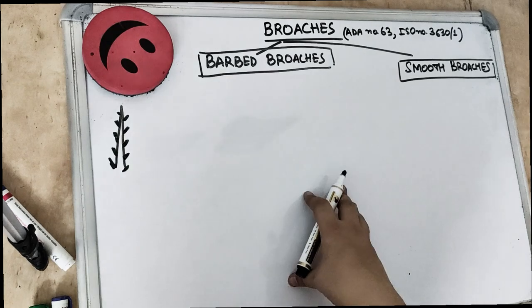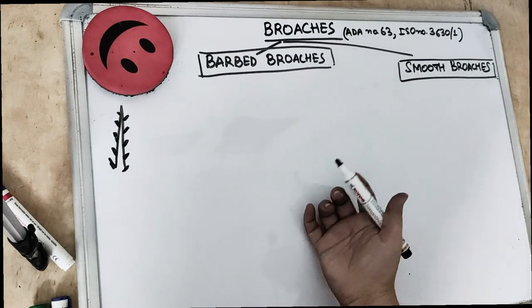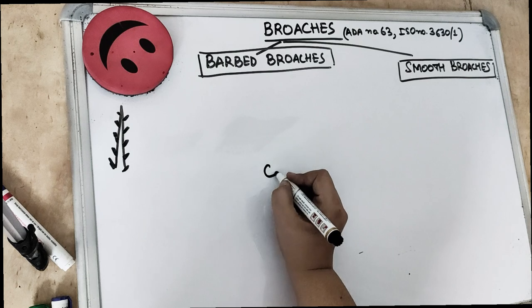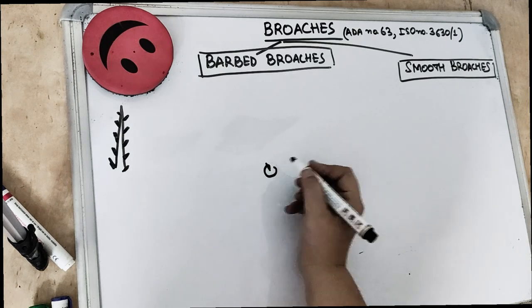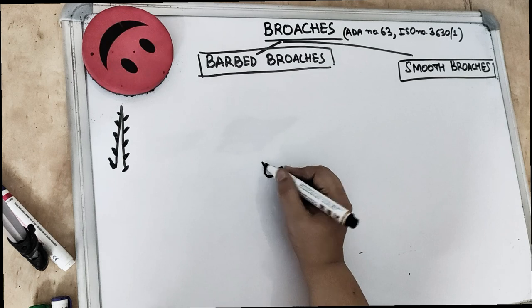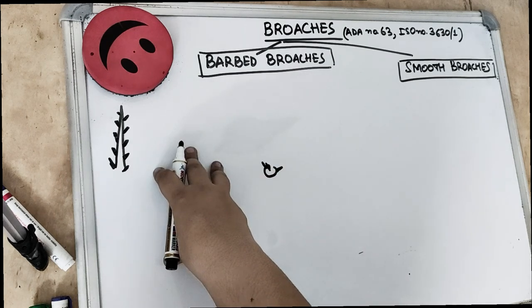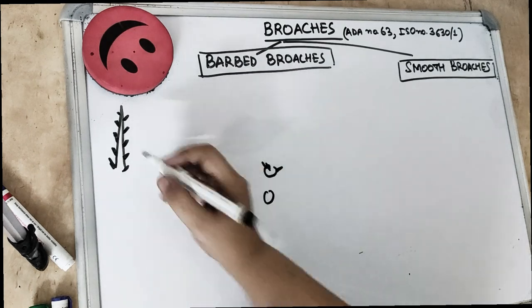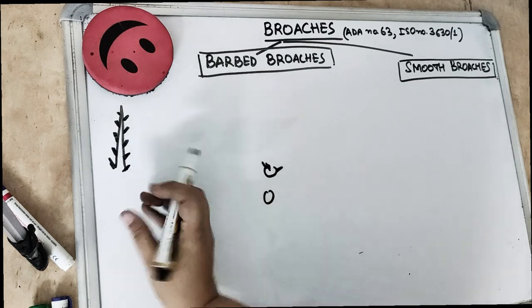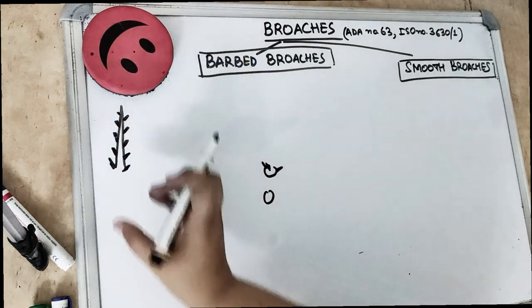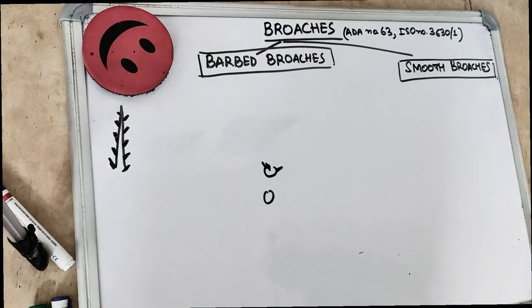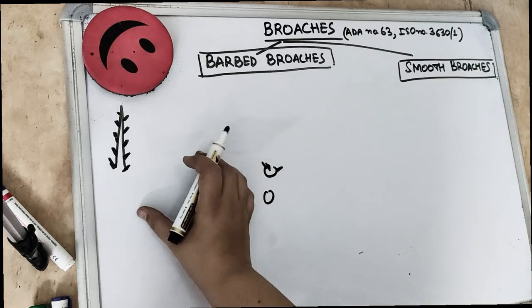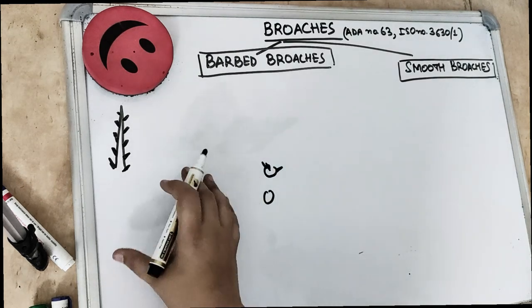Broaches are the instruments which are made up of stainless steel wire, a round stainless steel wire with some blades to form the sharp projecting barbs. So if we talk about the barbed broaches, they have sharp projections. Can you see the sharp projections? On the stainless steel file, they have the projections which are used for cutting or snagging the tissue.